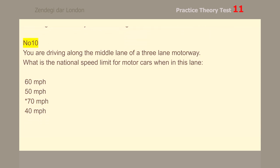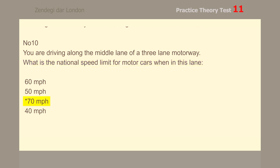Number 10. You are driving along the middle lane of a three-lane motorway. What is the national speed limit for motor cars when in this lane? 70 miles per hour.